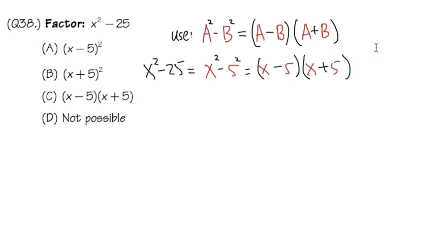That's it. So the answer for this, it's going to be choice C. x minus 5 times x plus 5.